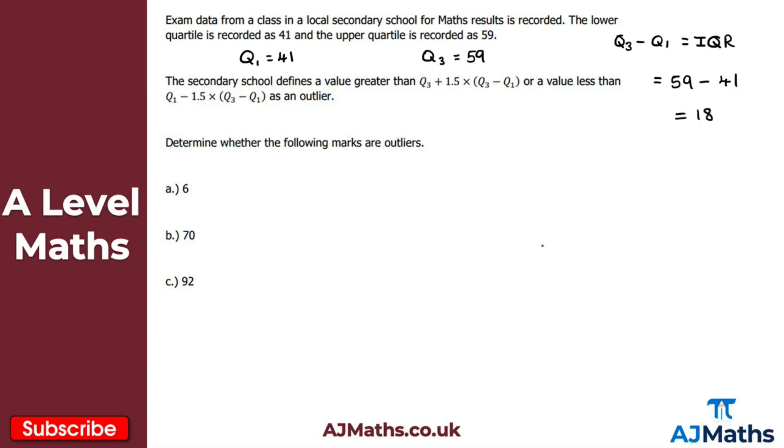So what I need to do now is find this value here. Any value greater than that would be an outlier, and any value less than this is also an outlier. So Q3 + 1.5 lots of the interquartile range, which is 18. So Q3 is 59 + 1.5 × 18. I'll just do this on my calculator so I don't make mistakes. 59 + 1.5 × 18, I'm putting that into my calculator, and I get 86.